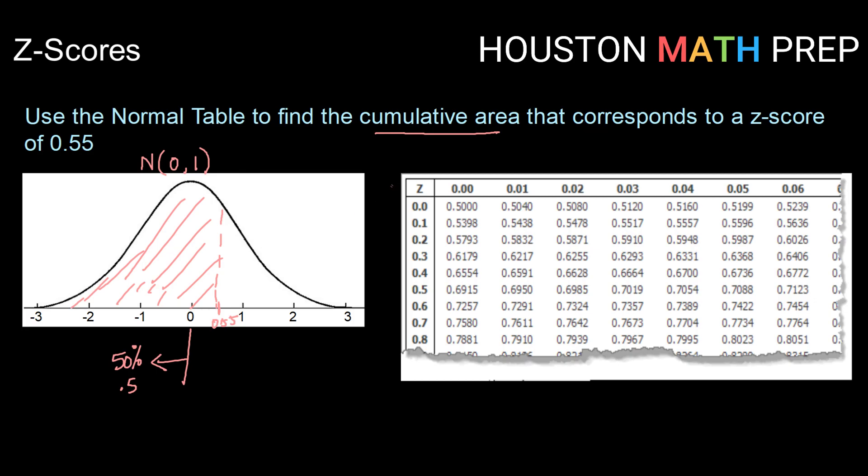Notice that we have a bunch of row labels here, 0.0, 0.1, 0.2, and so on. And then we have column labels that are representing the hundredths place. So 0.00, 0.01, 0.02, and so on. Those are your z-scores.